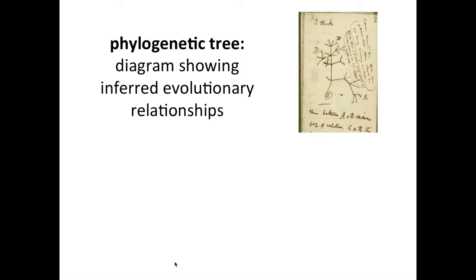A phylogenetic tree is a diagram showing inferred evolutionary relationships between a set of organisms. Phylogenetic trees have a branching pattern like this figure from Darwin's notebook, where he sketched out this branching pattern to reflect the process of descent with modification, a process central to Darwin's theories of evolution.